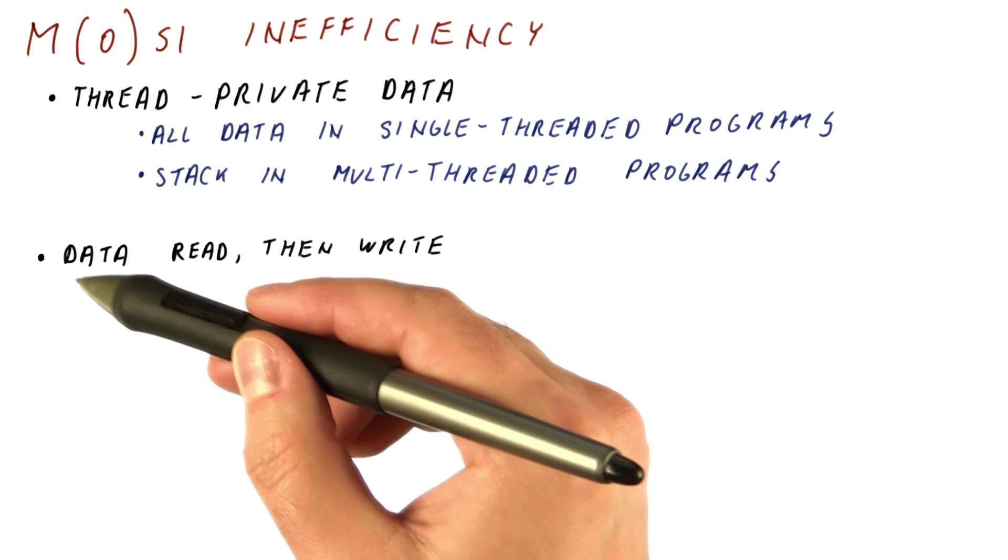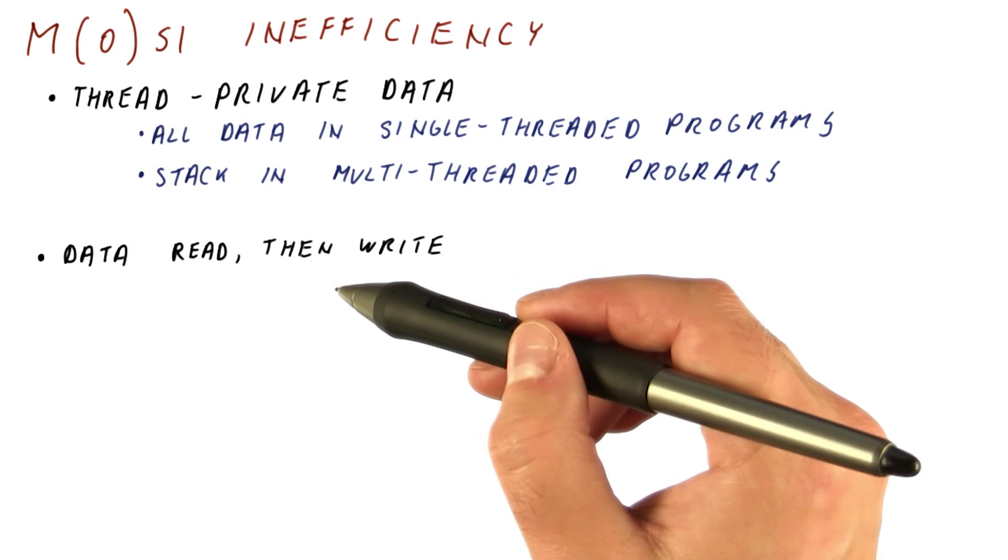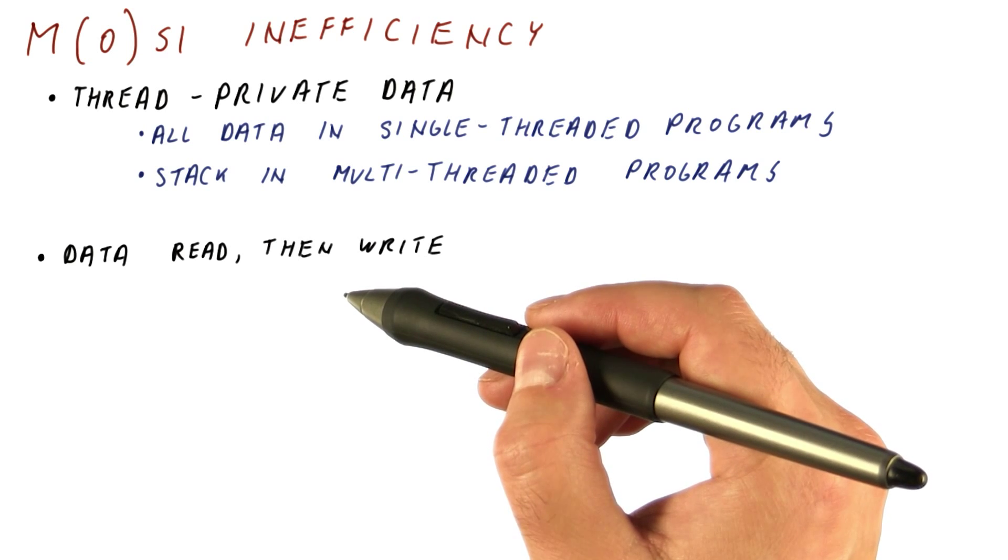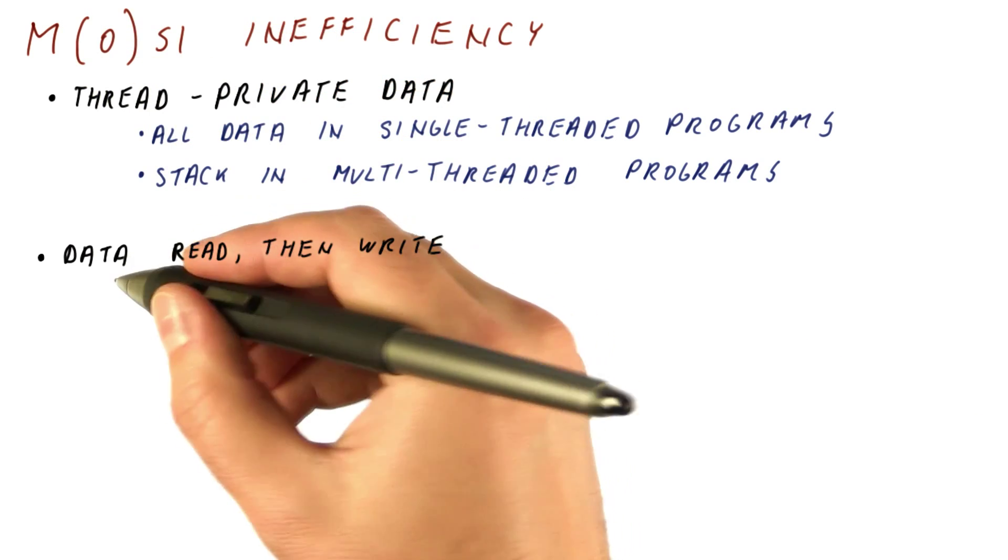The inefficiency occurs when we read the data in a thread and then write it, and this is really the only thread accessing this data. With both MSI and MOSI,